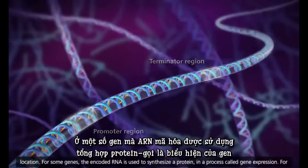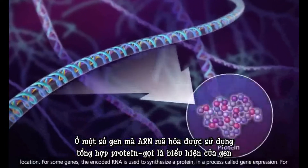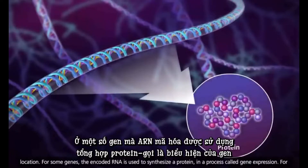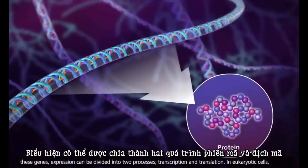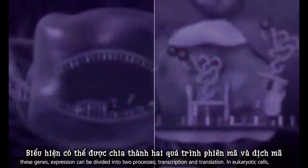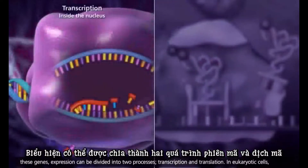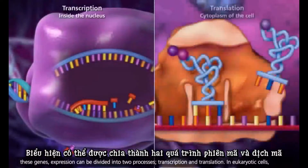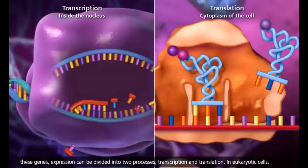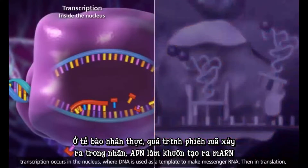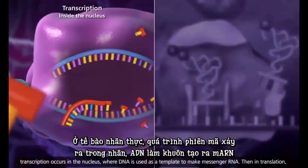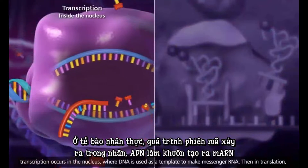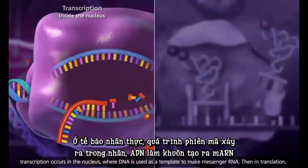For some genes, the encoded RNA is used to synthesize a protein in a process called gene expression. For these genes, expression can be divided into two processes: transcription and translation. In eukaryotic cells, transcription occurs in the nucleus, where DNA is used as a template to make messenger RNA.